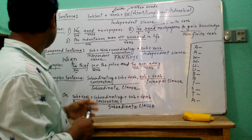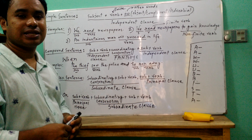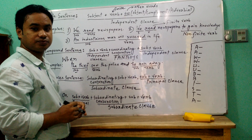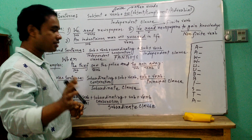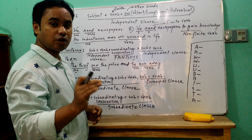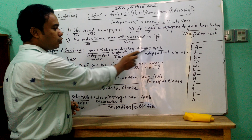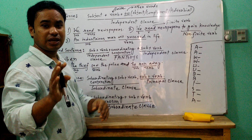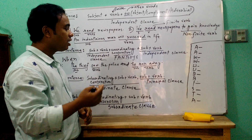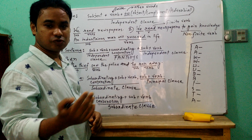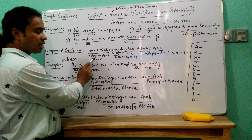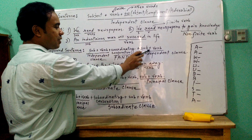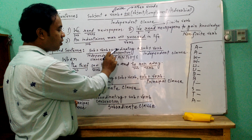Now let's talk about the compound sentence. A compound sentence is a sentence that has two independent clauses. You can also say a compound sentence has two or more simple sentences. An independent clause is just a simple sentence, so subject plus verb is one independent clause, and another subject plus verb is another independent clause. These two independent clauses are joined together by a coordinating conjunction.